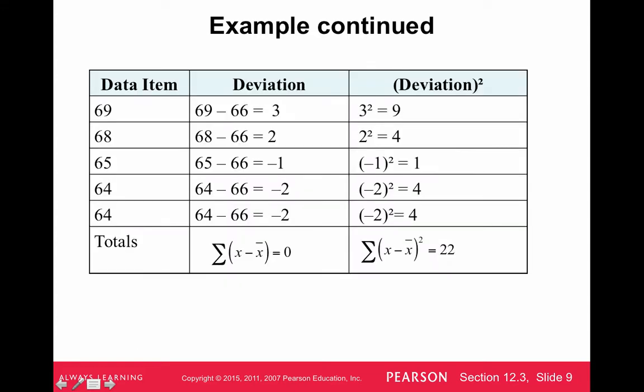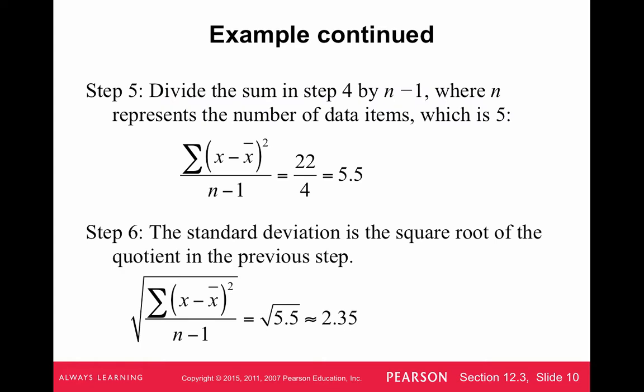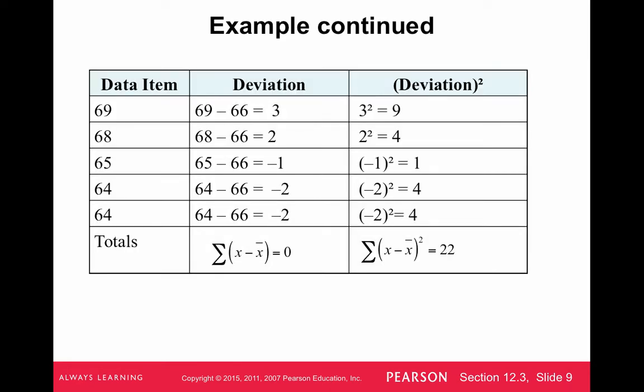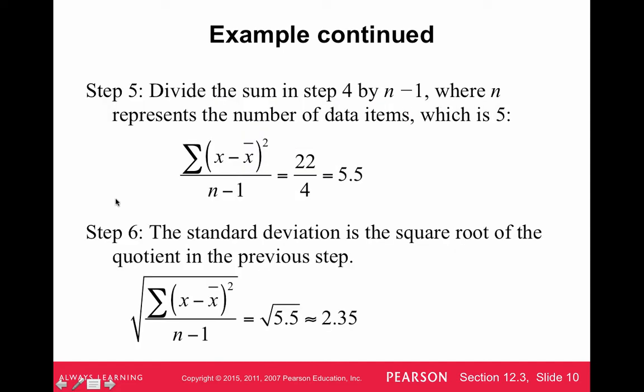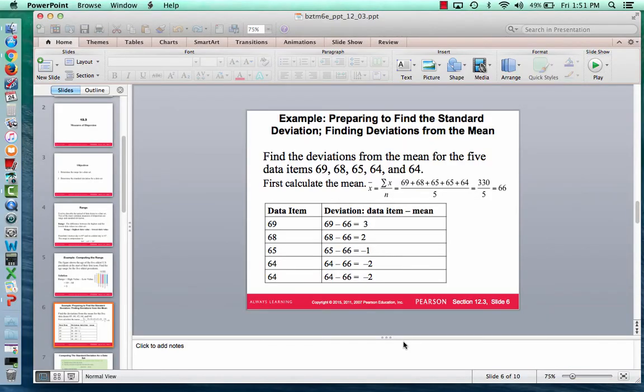And really, generally what that means is 2.35 is the average distance from the mean of 66 for this data set. So it tells you the spread of the data set in terms of the average distance from the mean. So it's a somewhat complicated formula, but if you practice it a couple times, you'll get used to the steps, and it's pretty easy. So good luck. We'll see you next time.